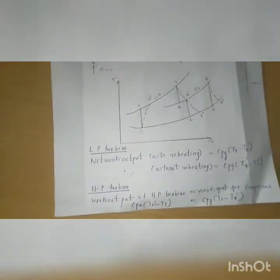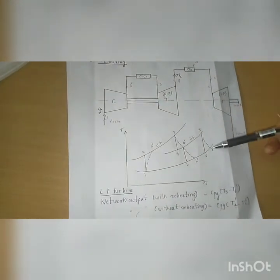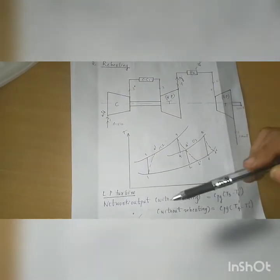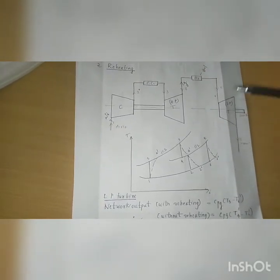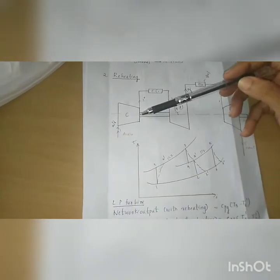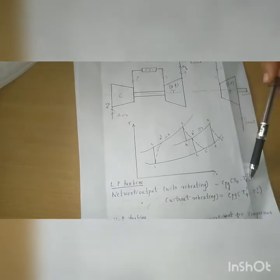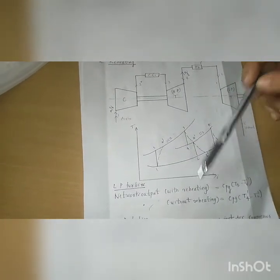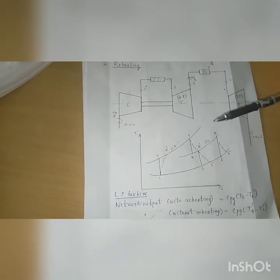The net work output with reheating is CpG × (T5 − T6 dash). This is the net work output with reheating because the high pressure turbine output is entirely utilized by the compressor. The low pressure turbine power is the net work output. Without reheating, the net work output is CpG × (T4 dash − TL dash).